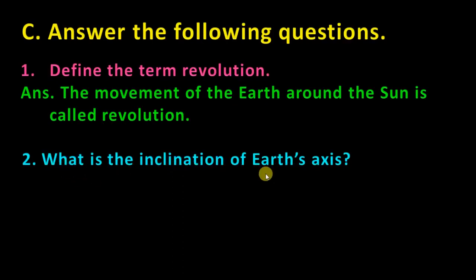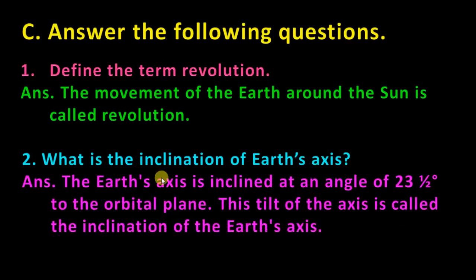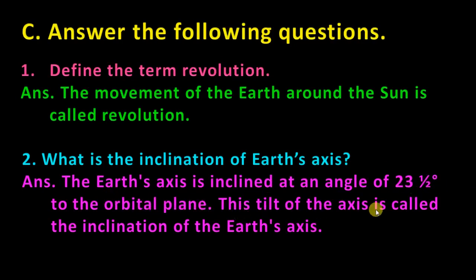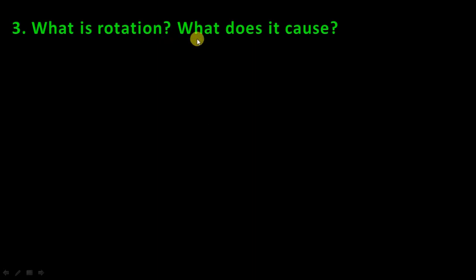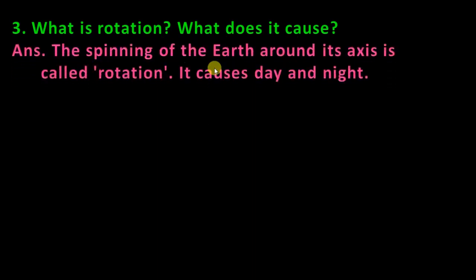What is inclination of the earth? Earth axis inclination means tilted. The earth's axis is inclined at an angle of 23.5 degrees to the orbital plane. This tilt of the axis is called the inclination of the earth's axis. What is rotation and what does it cause? The spinning of the earth around its own axis is called rotation.